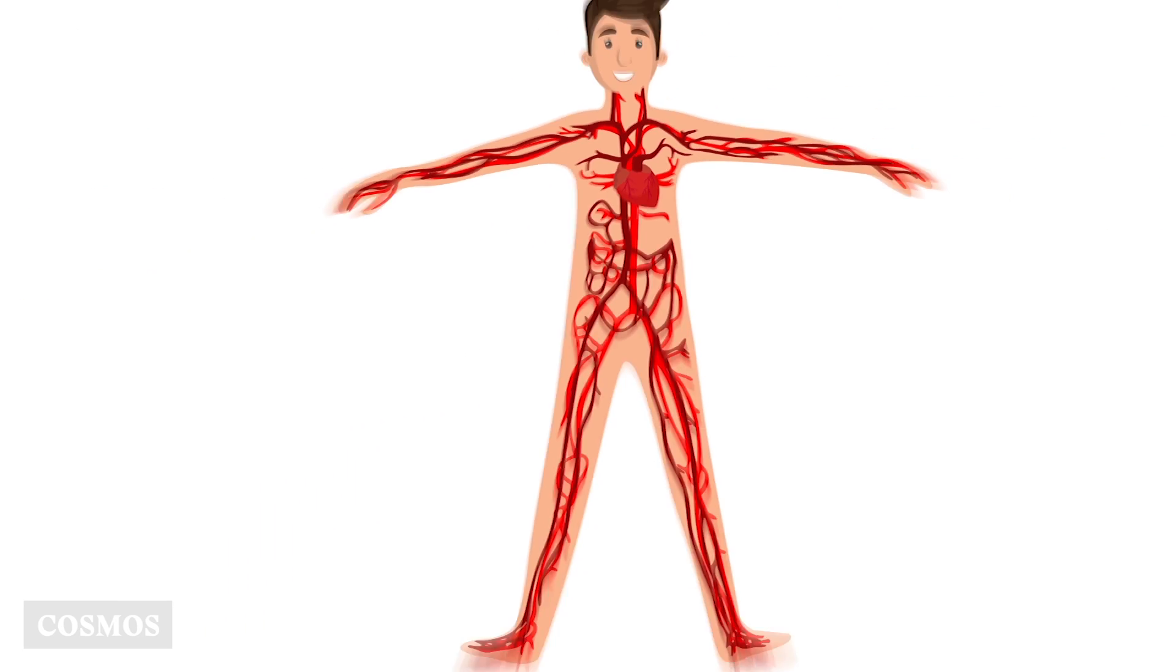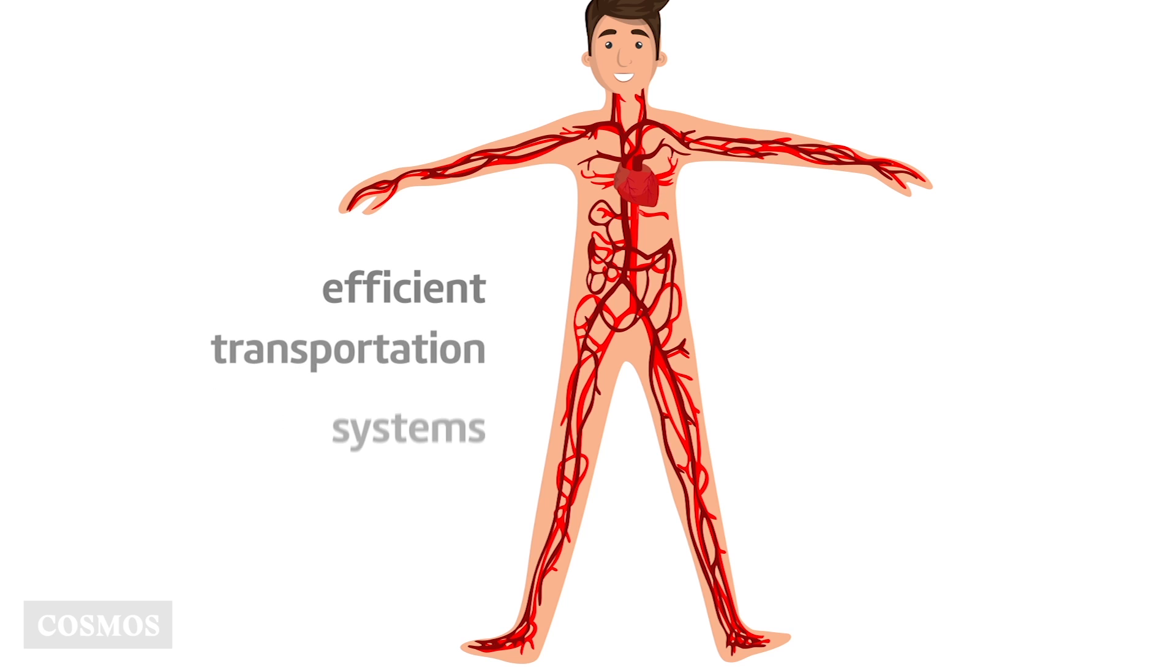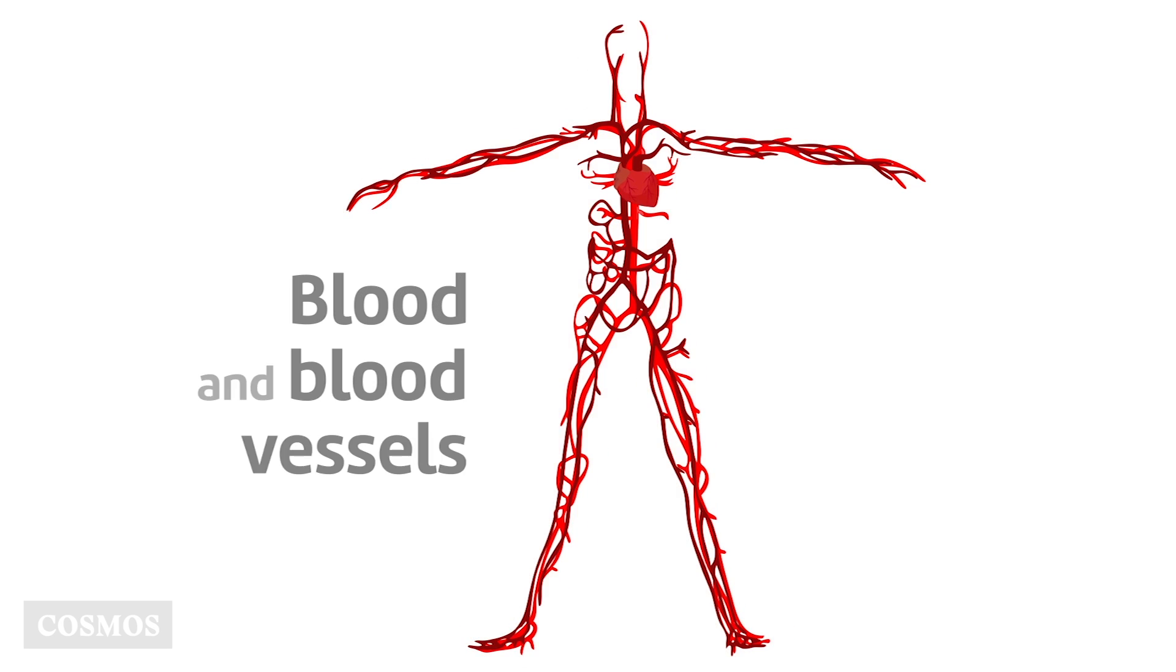Complex multicellular organisms like humans need efficient transportation systems to keep all their parts healthy. Our blood, and the vessels it flows through, are vital to keeping us alive.